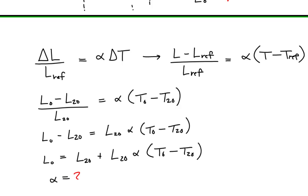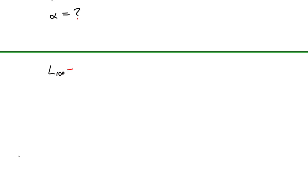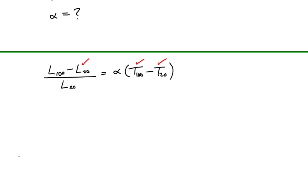At this point we see that we do not know the coefficient of linear expansion, alpha. We need to know alpha in order to find the length at 0 degrees, so we turn to what we are given. We are given information about the rod's length at 100 degrees Celsius, and we can use this to find an expression for alpha. Since we know the temperatures and lengths at both 20 and 100 degrees, this is enough information to determine alpha.